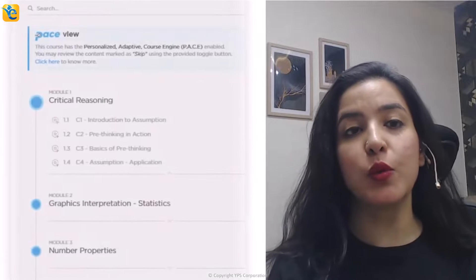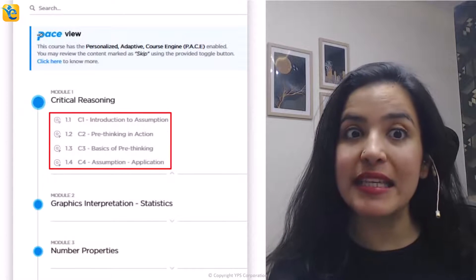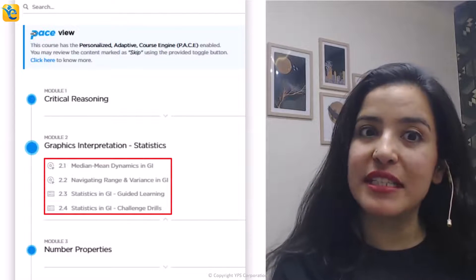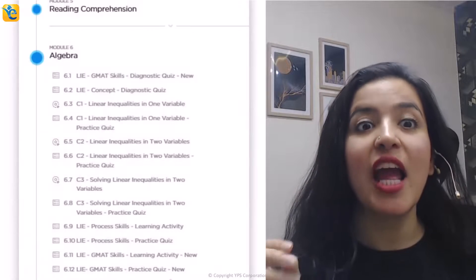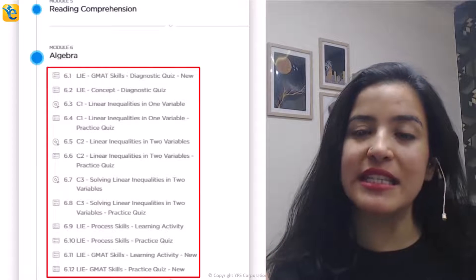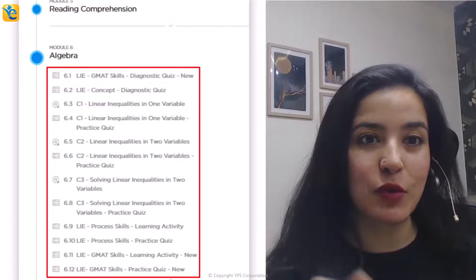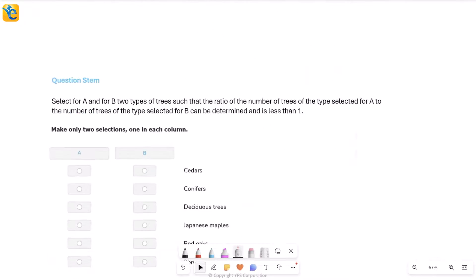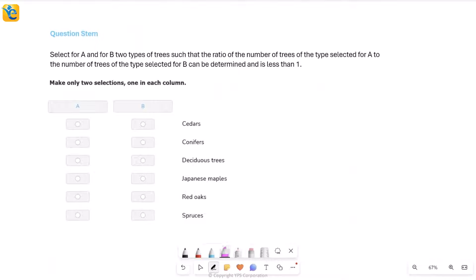For example, you can build your CR pre-thinking skills. You can learn how to approach statistics questions in graphics interpretation as part of DI. You can learn everything about linear inequalities as tested on the GMAT Focus Edition and a lot of other content. The link for this is in the description. Now let's get back to the question at hand. Now then, since we've understood this, we will go into what the question is asking.